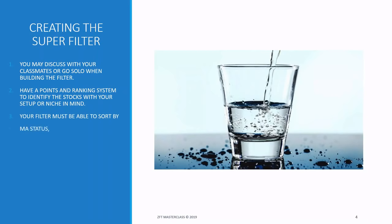Number three: your filter must be able to sort by MA status, type of tower/bus box, Fibonacci type, and RSI zone. Do you still remember the MA statuses? A stock's MA status tells you how fast it is — fast MA trail versus slow. There's also whether it's out or not.